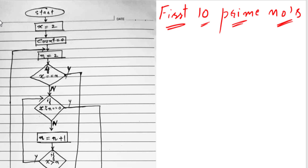Welcome back to Industry Technologies. In this video, we are going to find the first 10 prime numbers and print them using a flowchart that I have already drawn. I will explain how this flowchart works with the help of a memory map. I have declared and initialized three variables: x, count, and n.